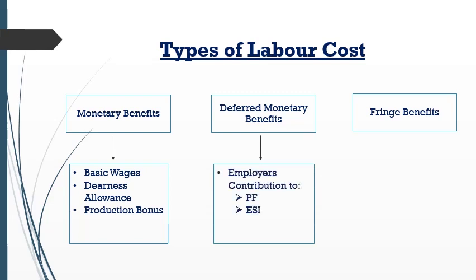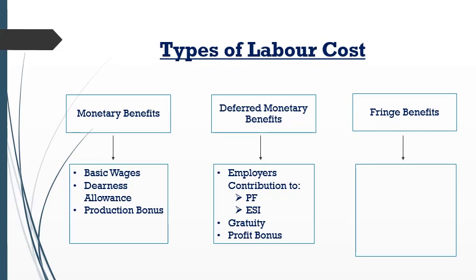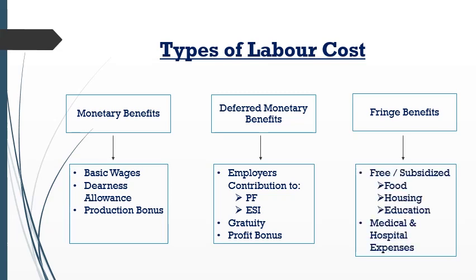Deferred monetary benefits include employer's contribution to provident fund, Employee State Insurance (ESI), gratuity, and profit bonus. Fringe benefits include free or subsidized food, housing, and education, as well as medical and hospital expenses borne by the organization for the employees or laborers. These are the different elements of labor cost that the organization pays to their employees.